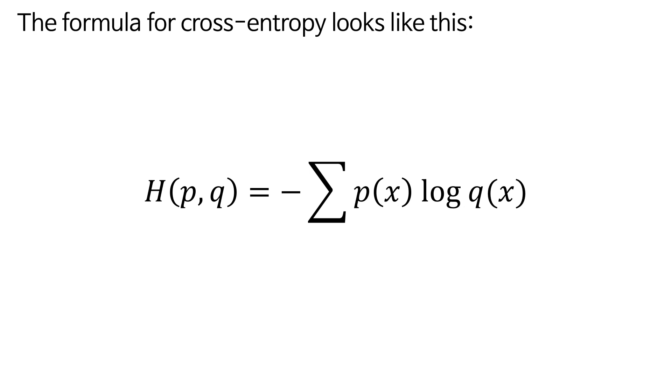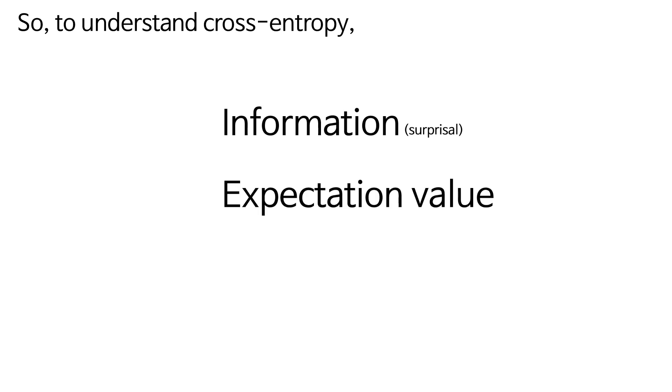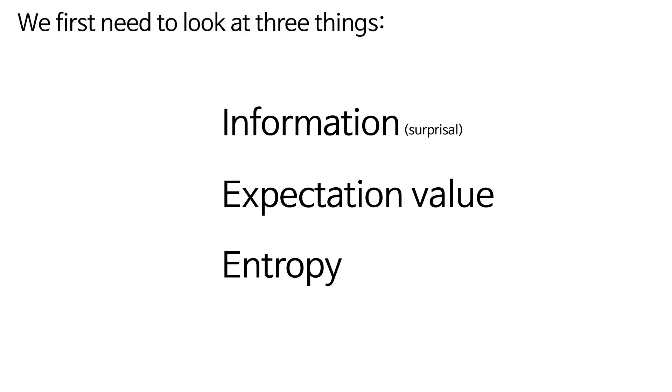The formula for Cross Entropy looks like this. It's hard to understand what this formula means just by looking at it. So to understand Cross Entropy, Information, Expectation Value and Entropy, we first need to look at three things.